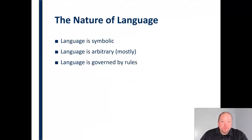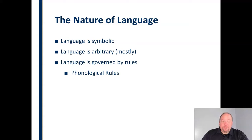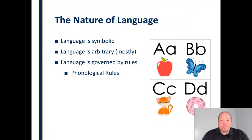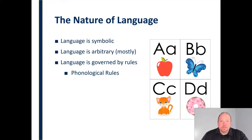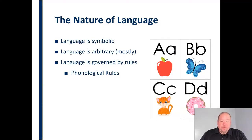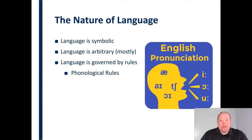Language is also governed by rules. There are specific rules that oversee the use and structure of language. Some of those include phonological rules, which have to do with the way that language sounds — the way each letter and combination of letters sounds. When I was younger, we learned to spell using phonics, which is based on phonological rules. We would sound things out: apple — A is for apple. Every language is different in how it uses and develops these pronunciation rules.